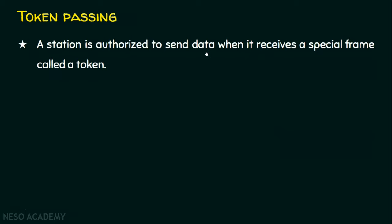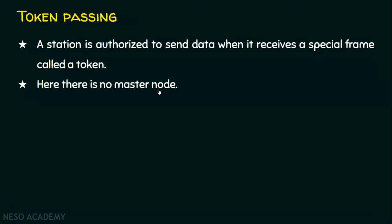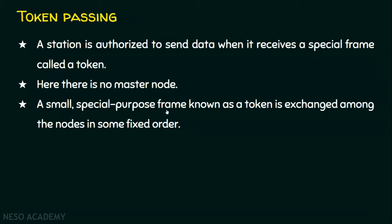A station is authorized to send data whenever it receives a special frame called the token. Whenever a station is holding the token, it means it's that station's turn to send the data. There is no master kind of approach here — everybody is equal in this network. A small special-purpose frame known as a token is exchanged among the nodes in some fixed order.